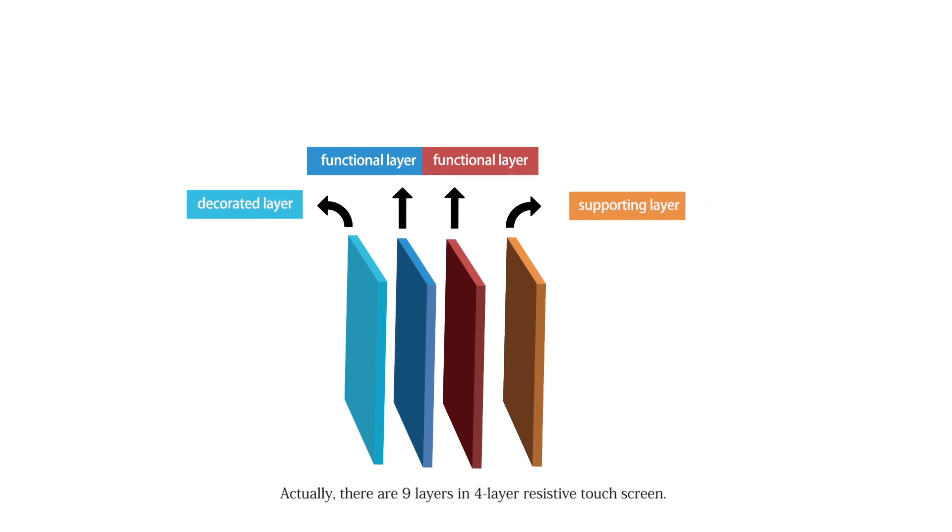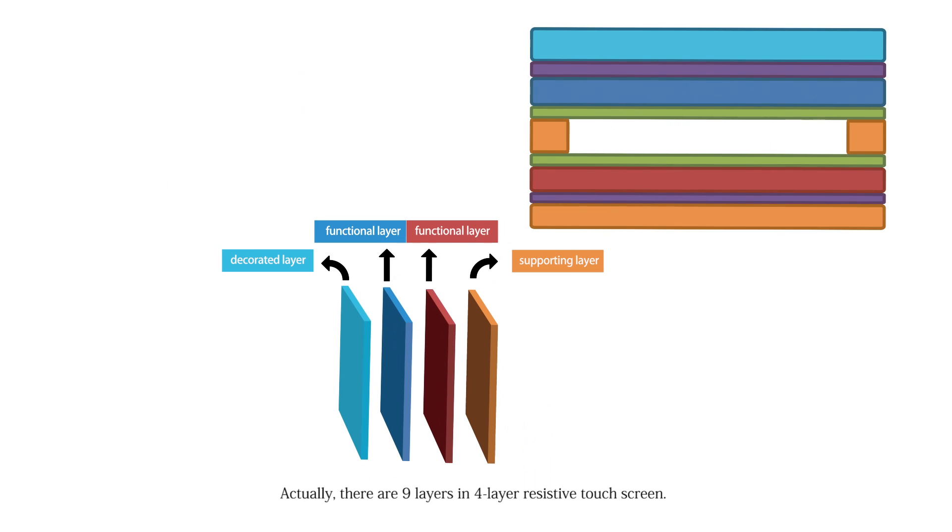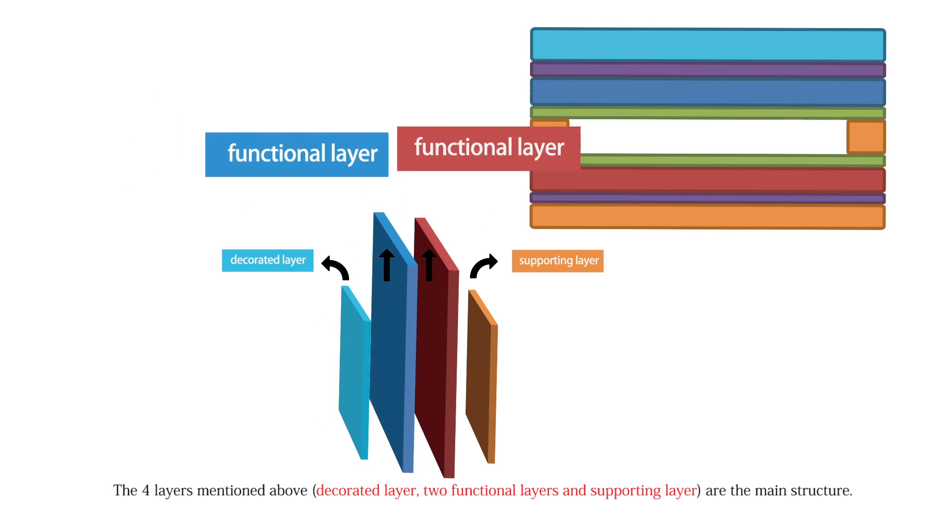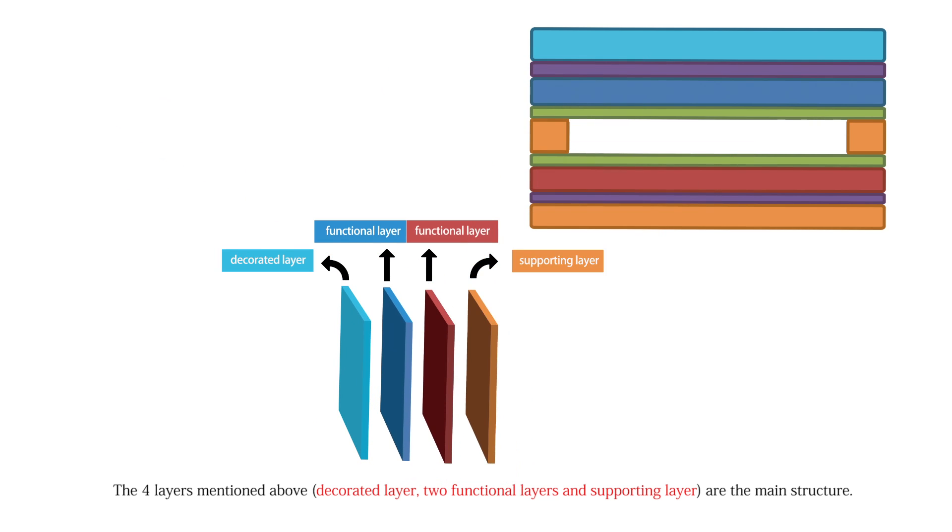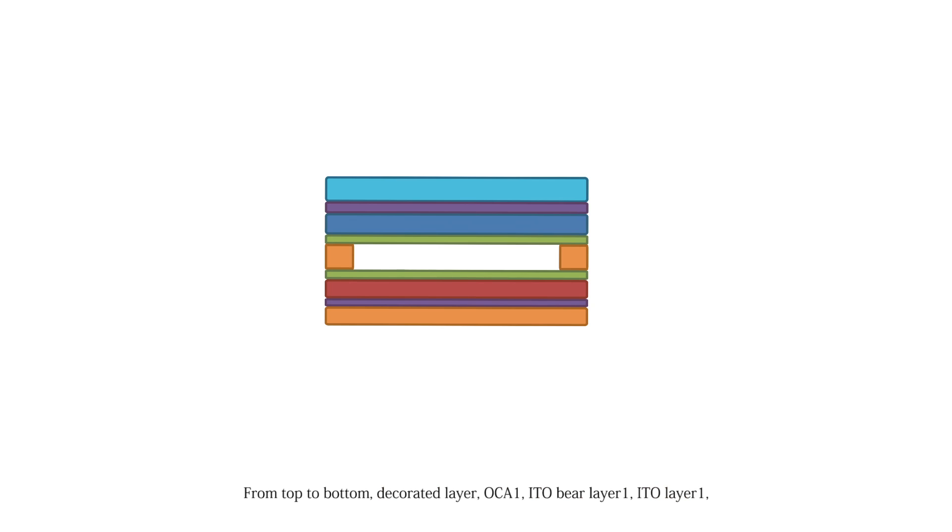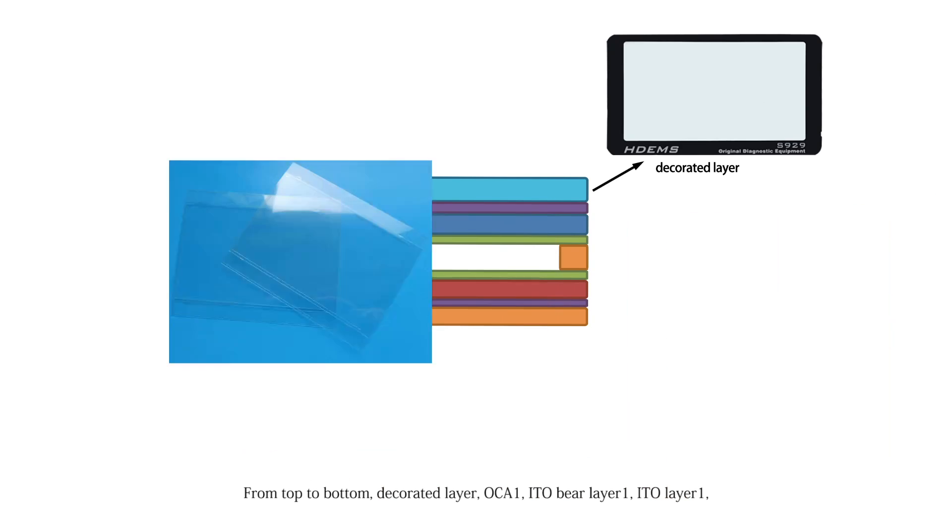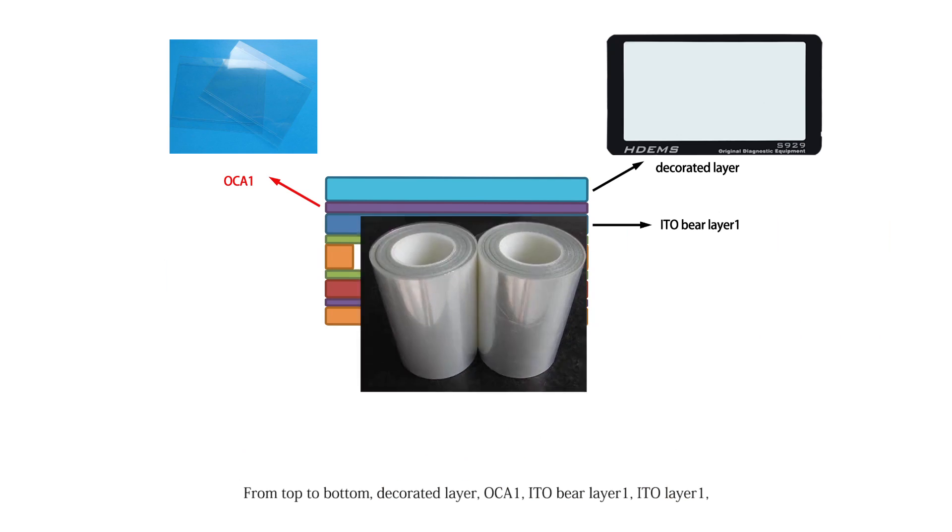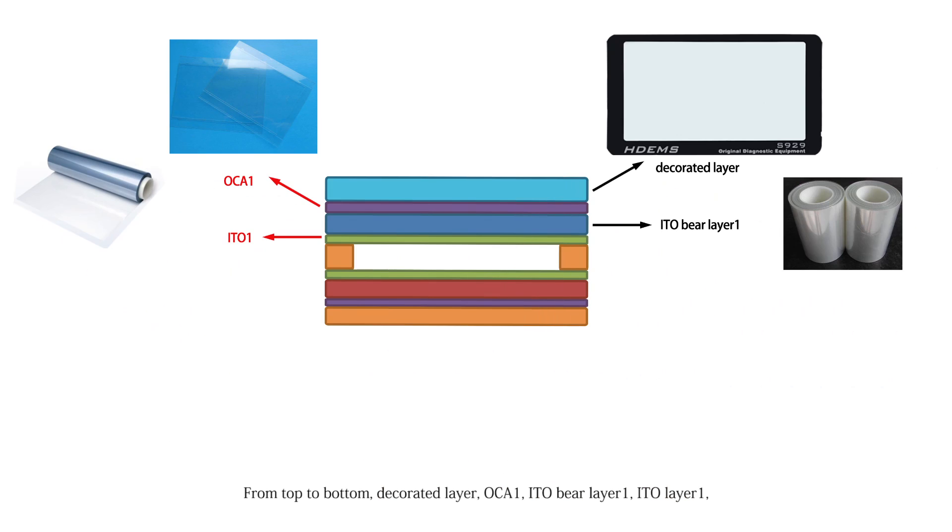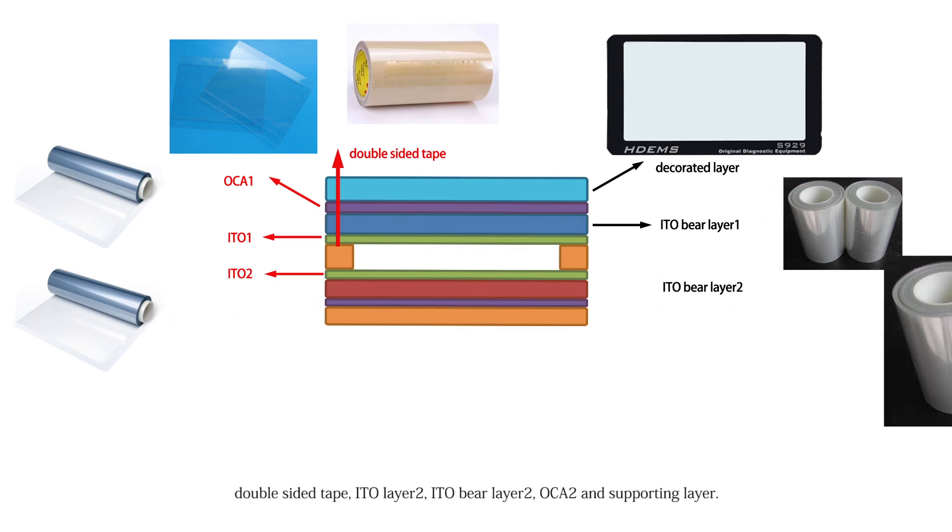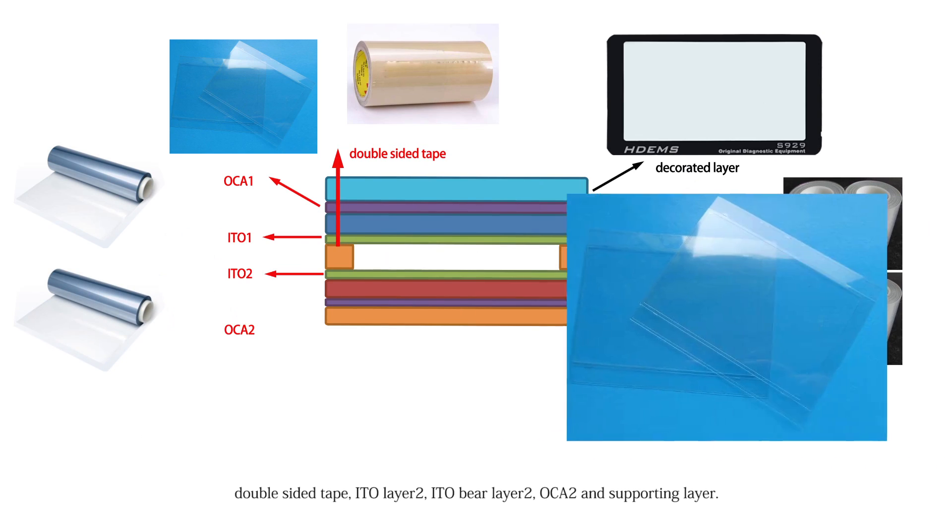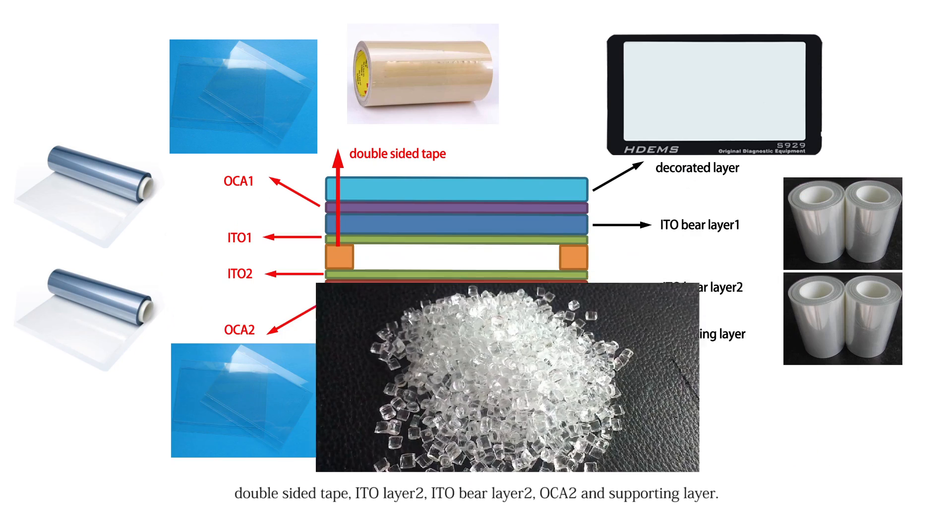Actually, there are 9 layers in 4-layer resistive touch screen. The 4 layers mentioned above, decorated layer, 2 functional layers and supporting layer are the main structure. From top to bottom, decorated layer, OCA1, ITO bare layer 1, ITO layer 1, double-sided tape, ITO layer 2, ITO bare layer 2, OCA2 and supporting layer.